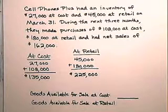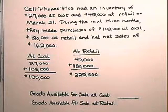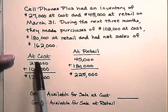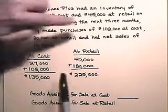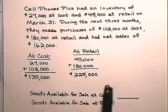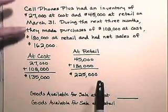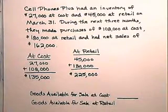Now let's estimate inventory value using the retail method. CellPhones Plus had an inventory of $27,000 at cost and $45,000 at retail on March 31st. During the next three months, they made purchases of $108,000 at cost and $180,000 at retail, and had net sales of $162,000. The value of inventory at cost is $27,000 plus $108,000 purchases, giving us $135,000. At retail, we started with $45,000 and made purchases of $180,000, giving us an inventory value at retail of $225,000.